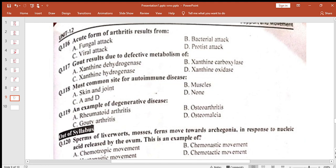Acute form of arthritis is bacterial attack. Gouty results due to defective metabolism of xanthine oxidase. Most common site for autoimmune disorder: skin and joints. An example of degenerative disease: osteoarthritis.